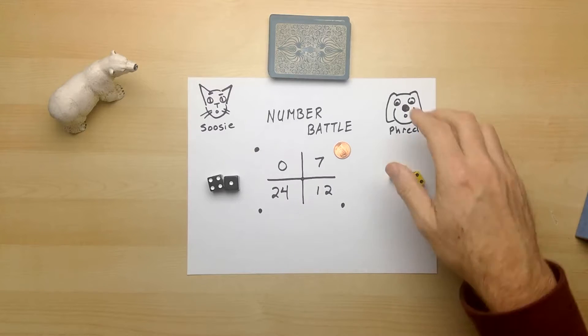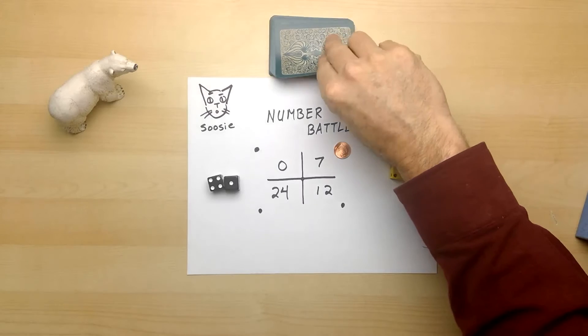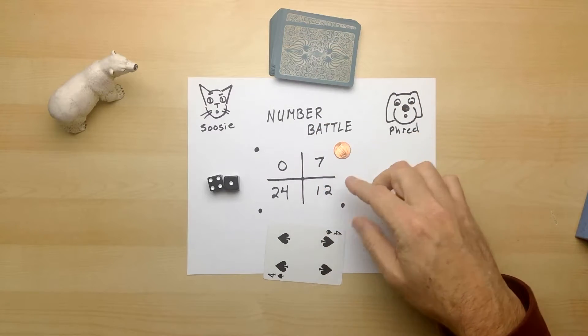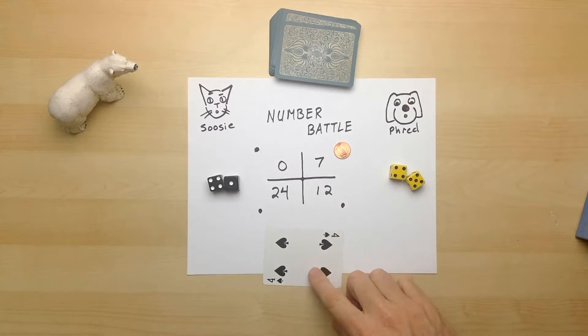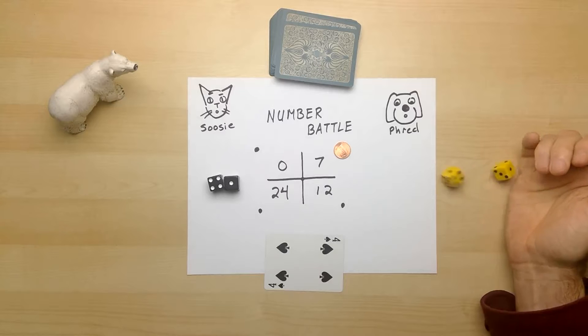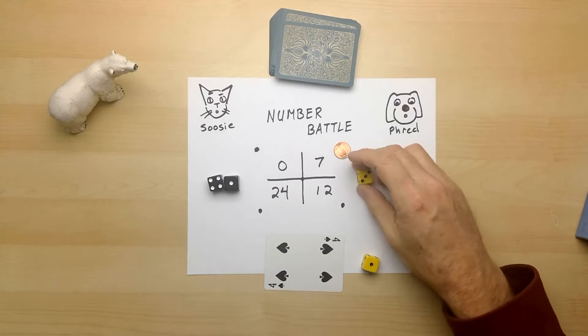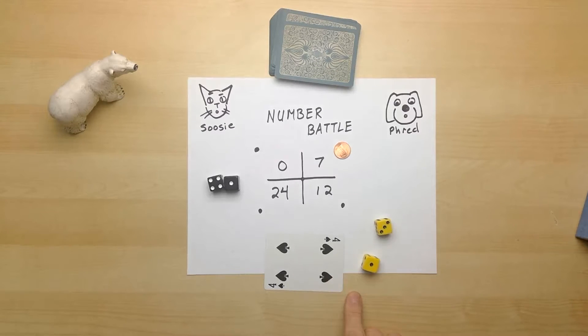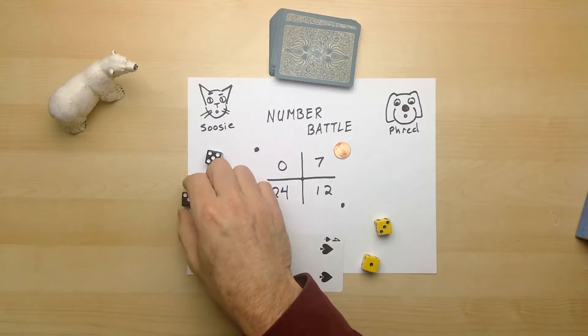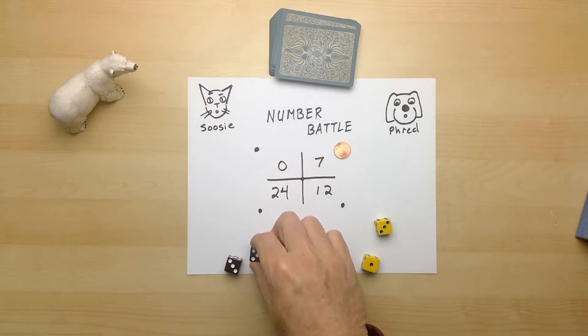In the first round, the card that matters is a four. And we're trying to get to the number seven. We have, we should try to use this four and the dice. So if Fred rolls, Fred has a one, a three, and a four to think about to try to make a seven. If Susie rolls, Susie rolls a three and a five. And Susie can be thinking of three, five, and four.